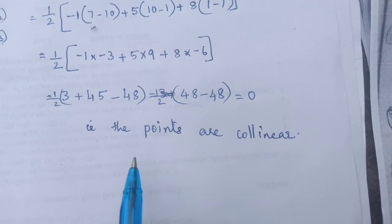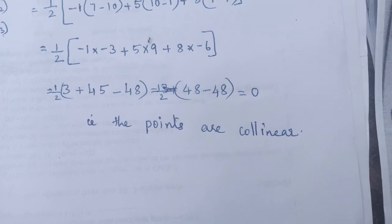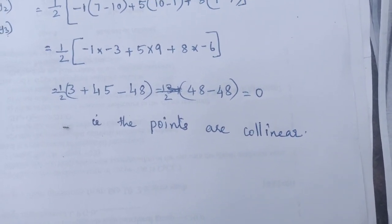The points are collinear. Then we can prove that points are collinear. That is same line. Okay, thank you.